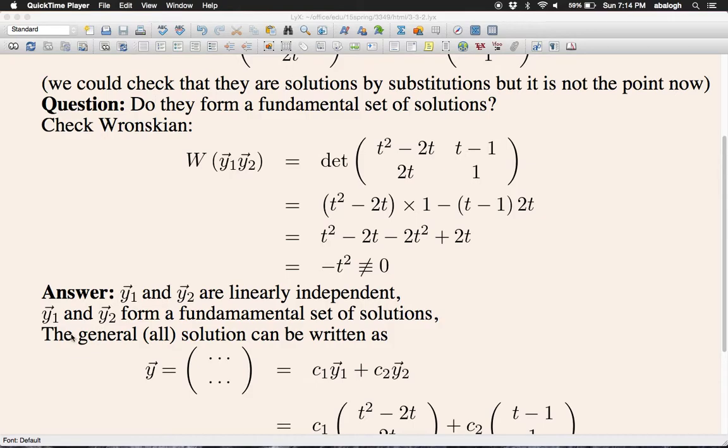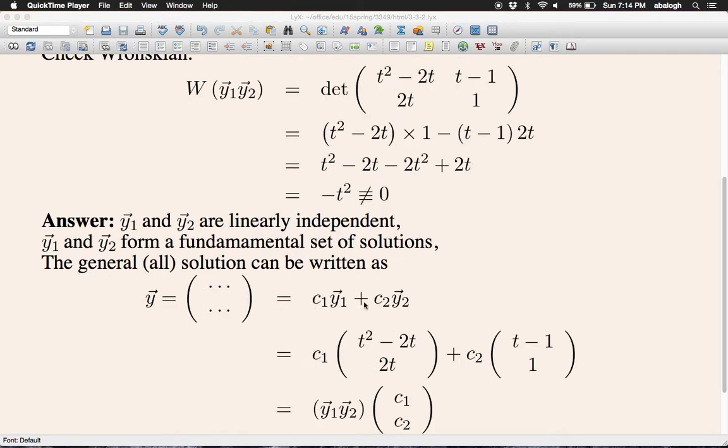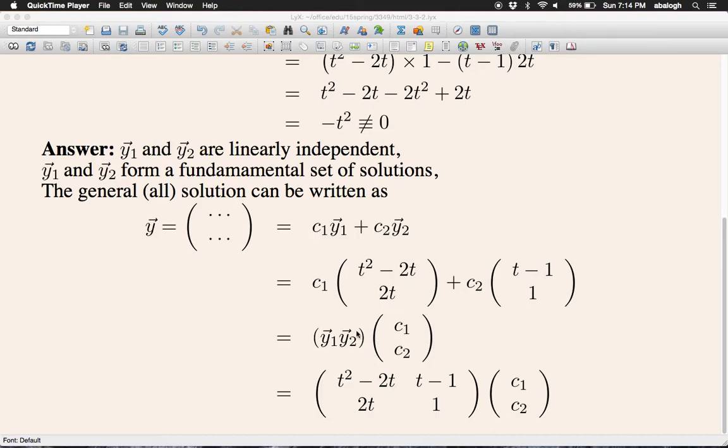Which means that the general solution, all solutions, can be written as a linear combination of y1 and y2. This is how it looks and you can also write it in matrix vector multiplication form by putting together the two vectors y1 and y2 and coefficients c1 and c2.